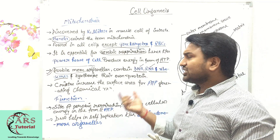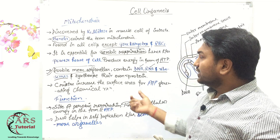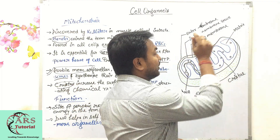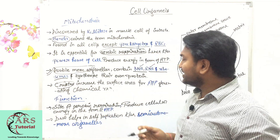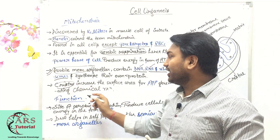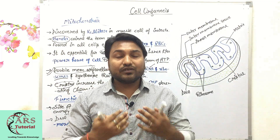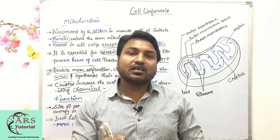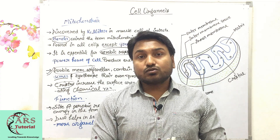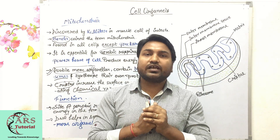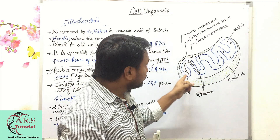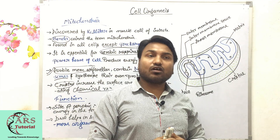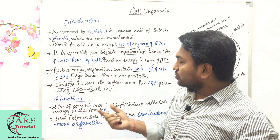Because DNA, RNA, and ribosomes are found in mitochondria, it can synthesize its own proteins. Now, the cristae — these foldings inside the mitochondria — increase the surface area for ATP-generating chemical reactions. So to produce more energy in the form of ATP, the cristae provide increased surface area.